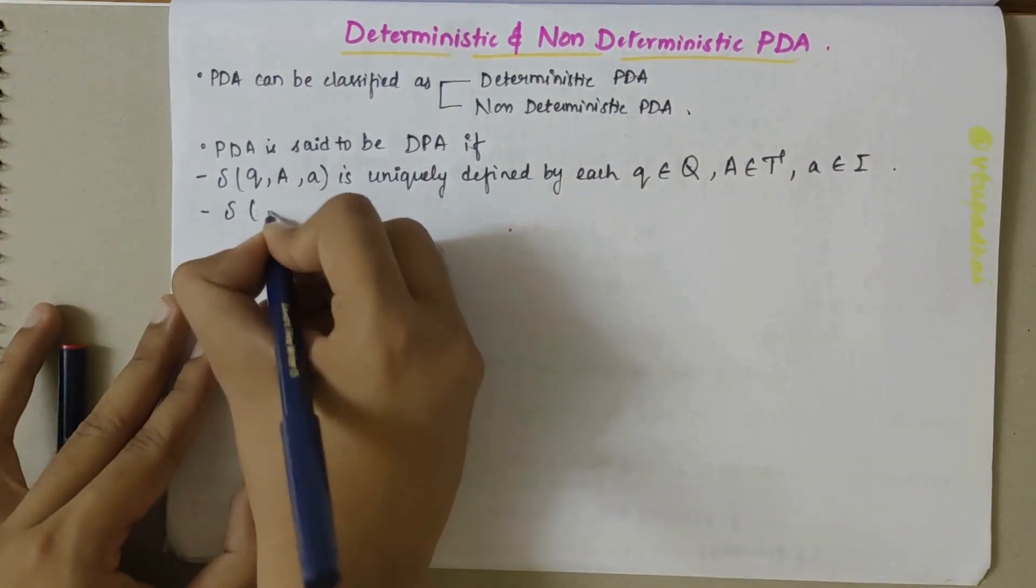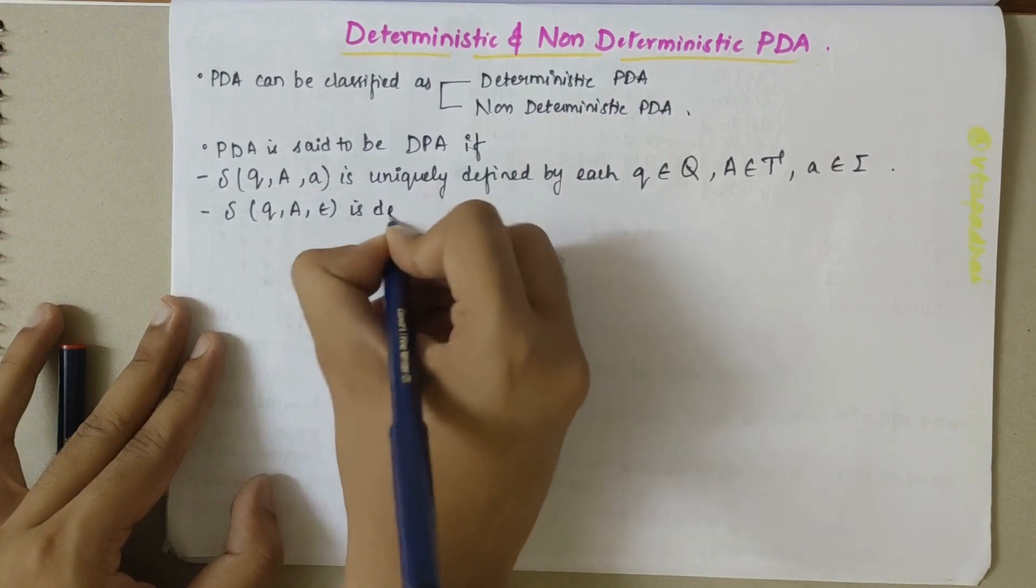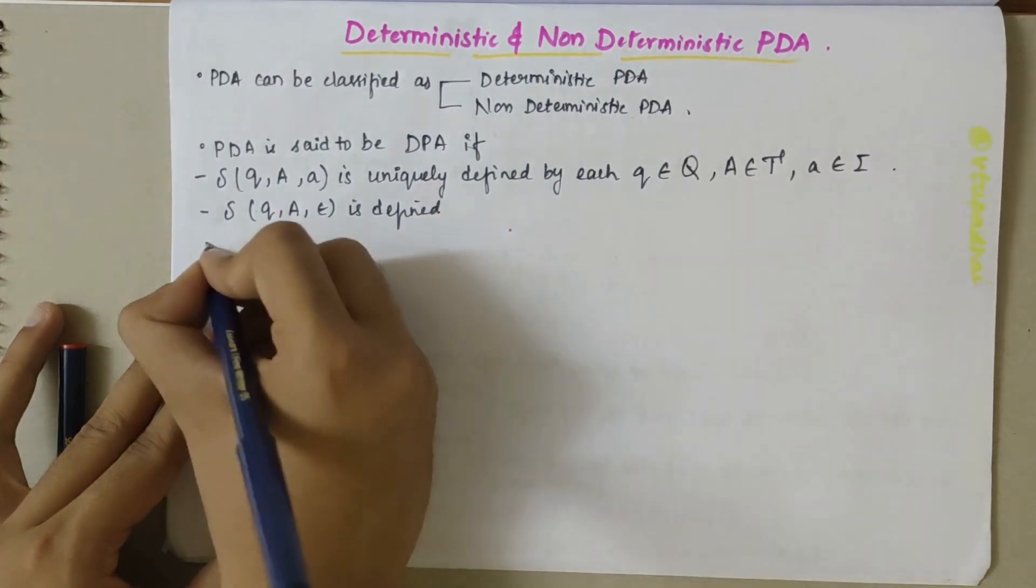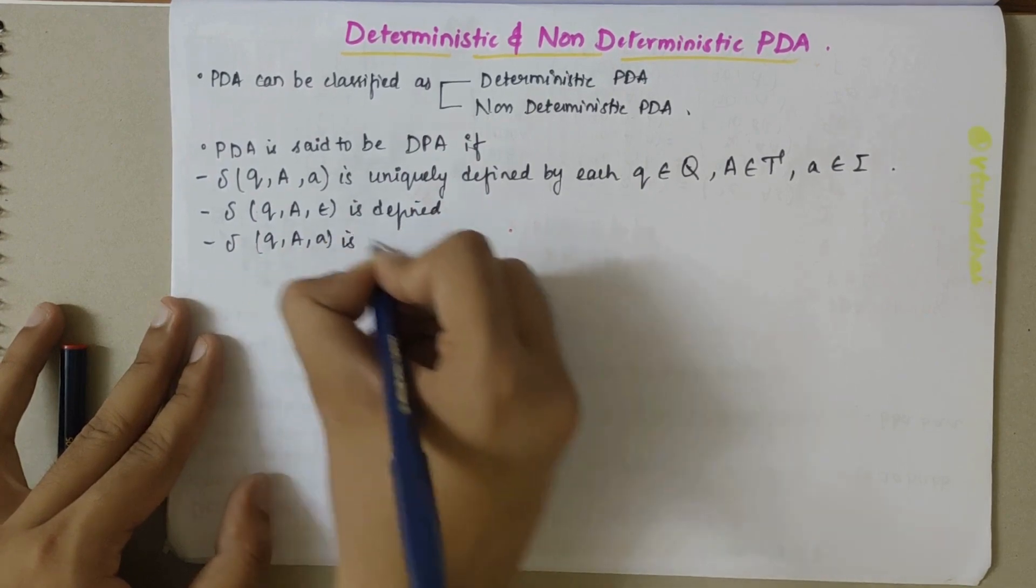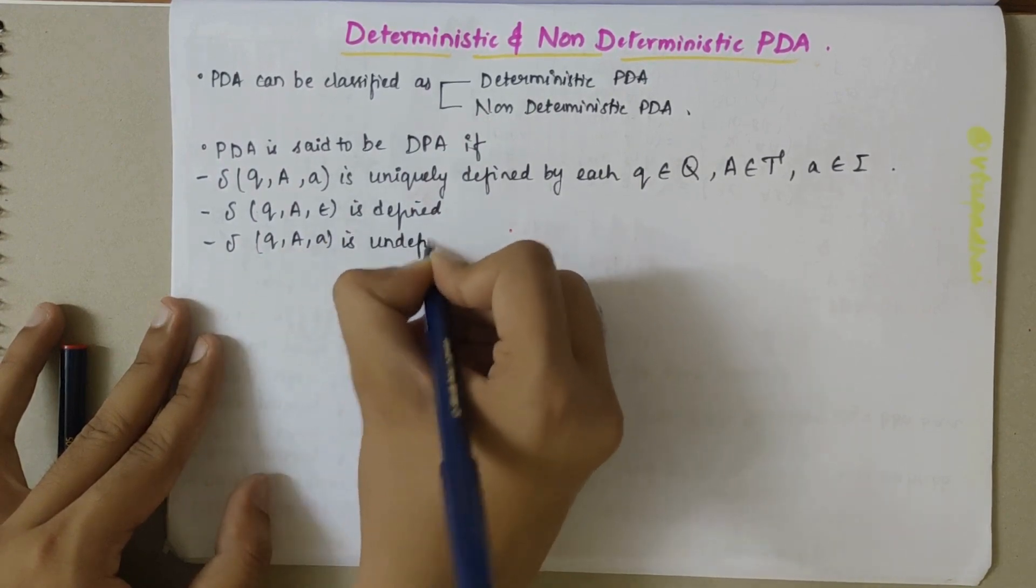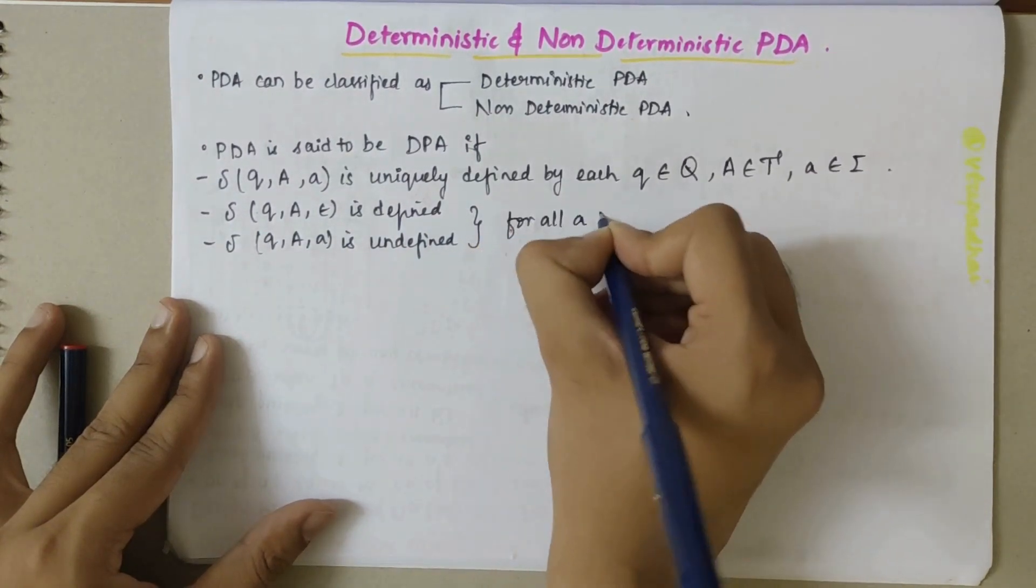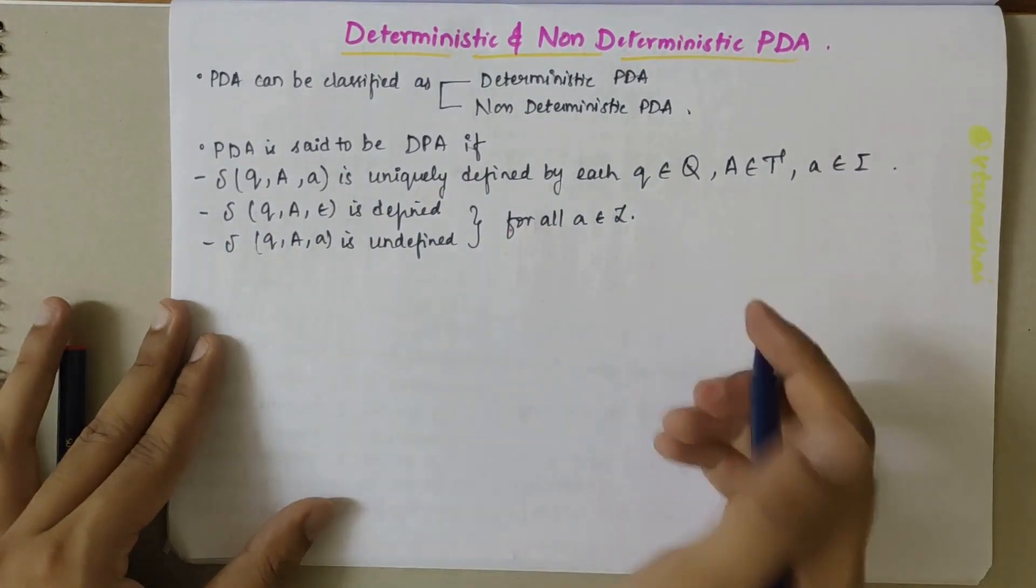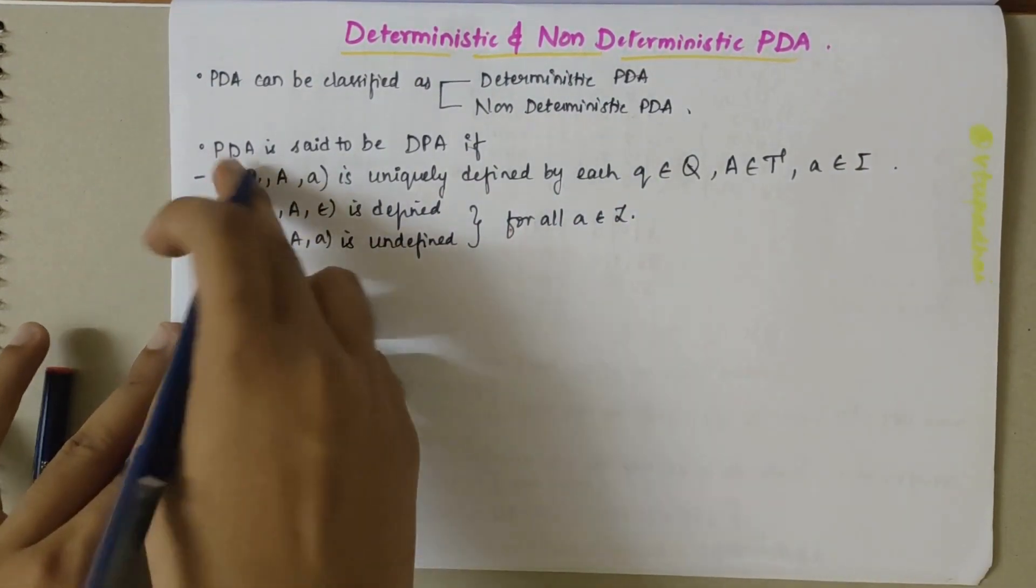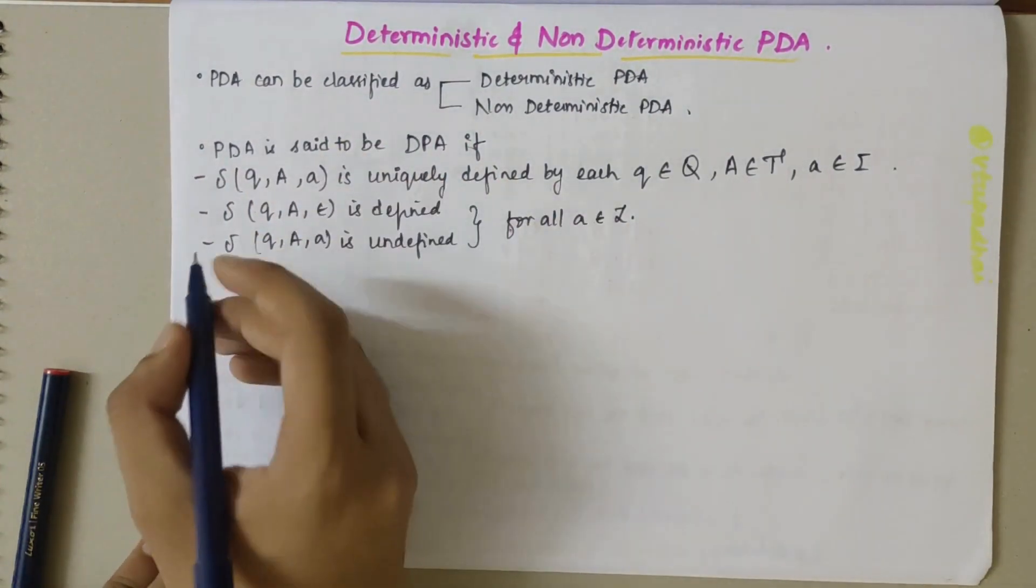You can say that transition of Q, A, Epsilon is defined and transition of Q, A, a is undefined for all alphabets that belong to Σ, for all a that belongs to Σ. If this condition is satisfied then that PDA is said to be the deterministic PDA.